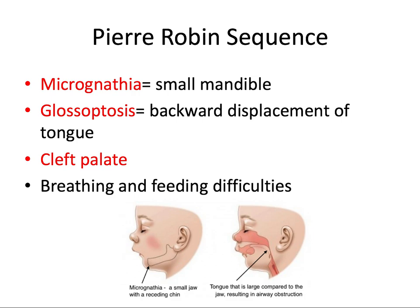Pierre-Robin sequence is one of those domino anomalies. The first domino — the first anomaly kicking off the rest — is micrognathia, a very small mandible. This small mandible causes posterior displacement of the tongue toward the back of the oral cavity, which is called glossoptosis. This abnormal tongue posture can interfere with the development of the palate, preventing the palatal shelves from flipping up and closing at the midline. The tongue displacement and cleft palate also make breathing and feeding much more challenging — one thing leads to the next.